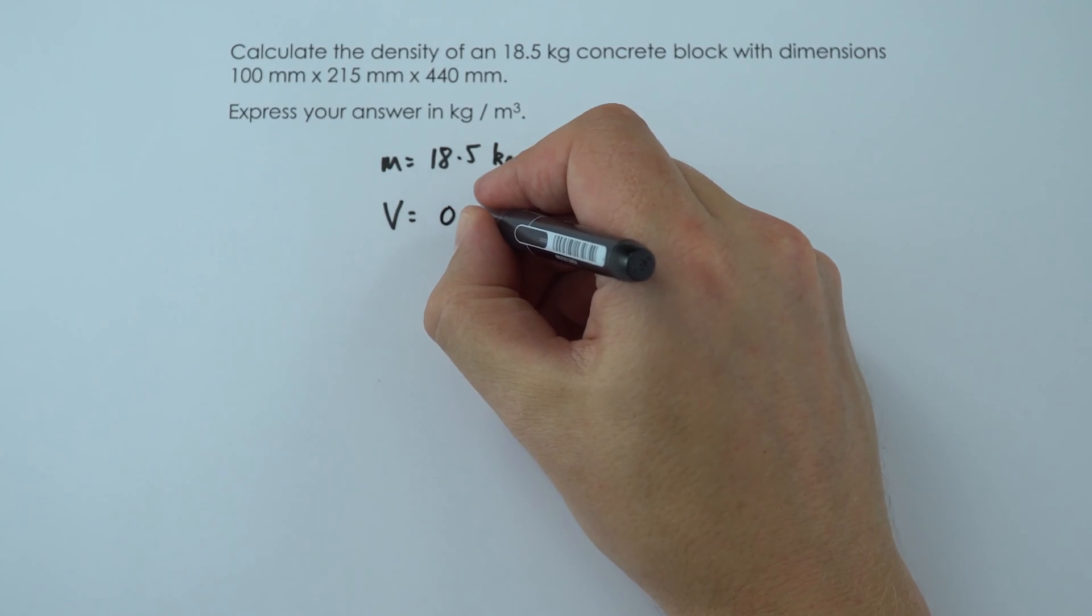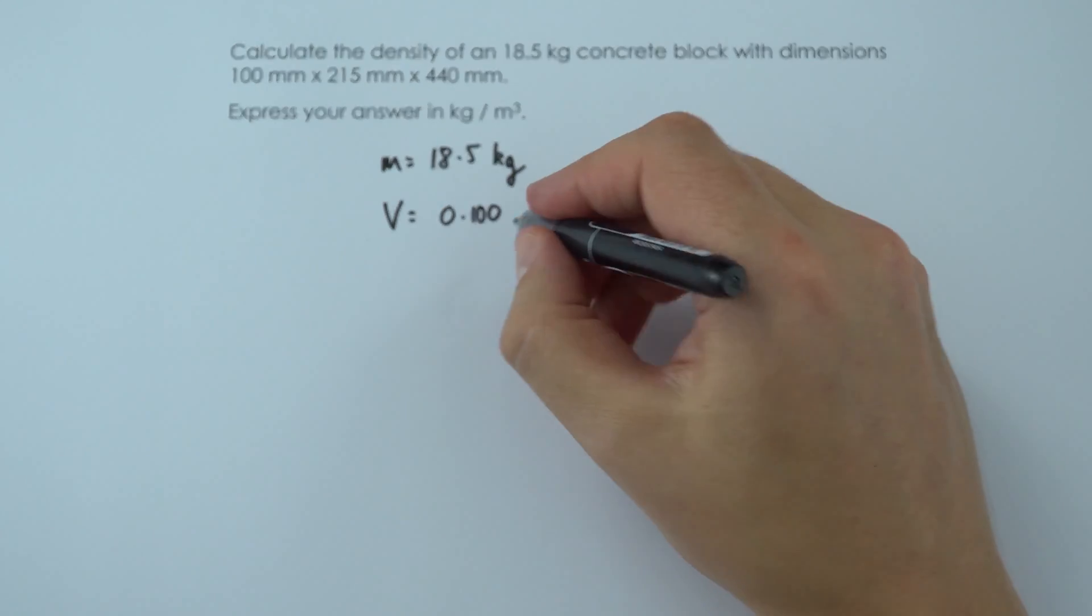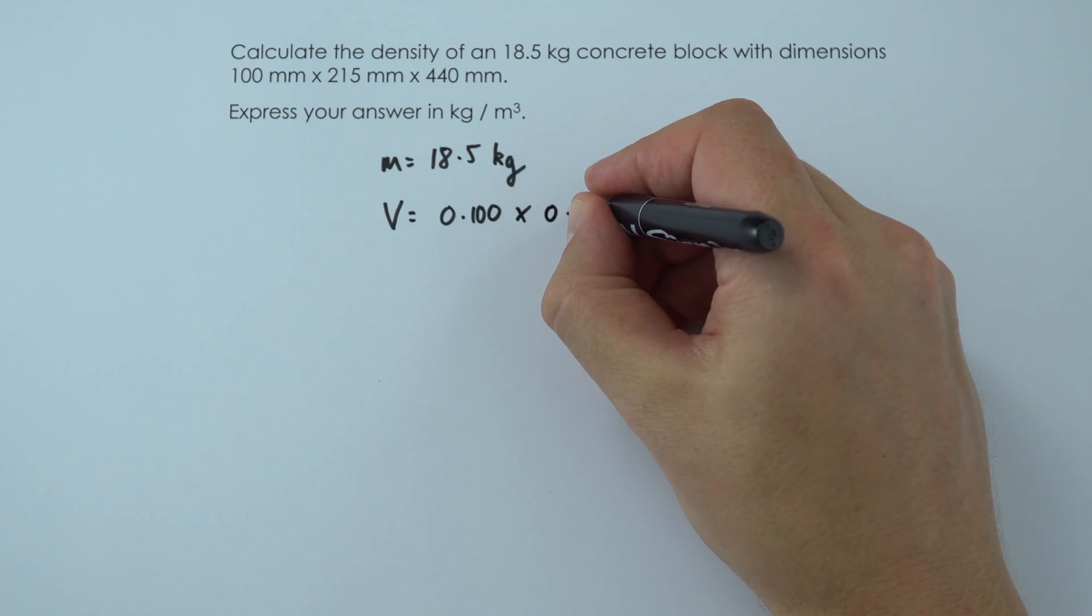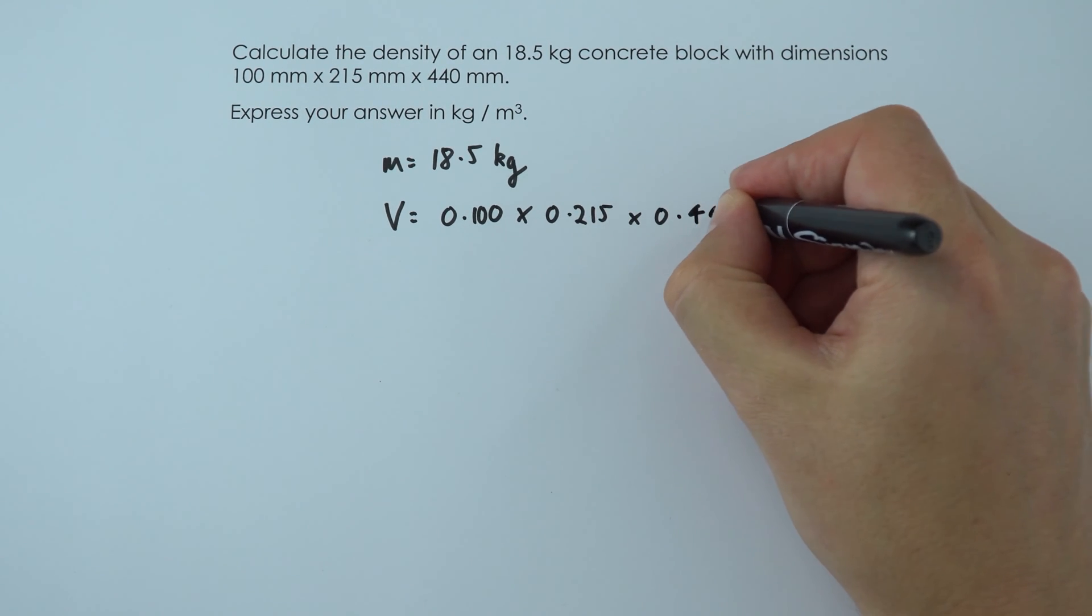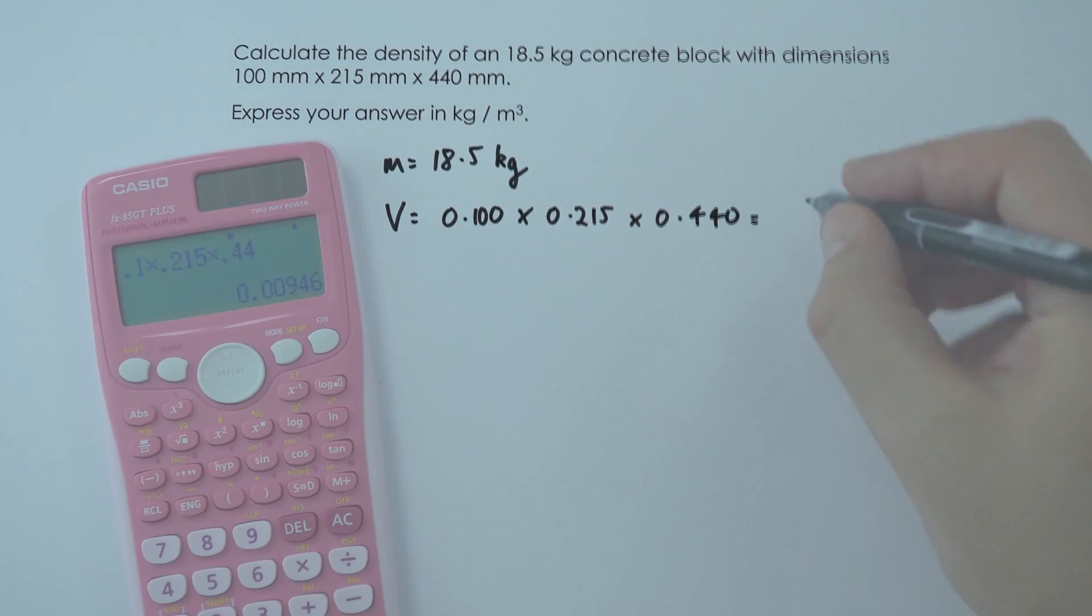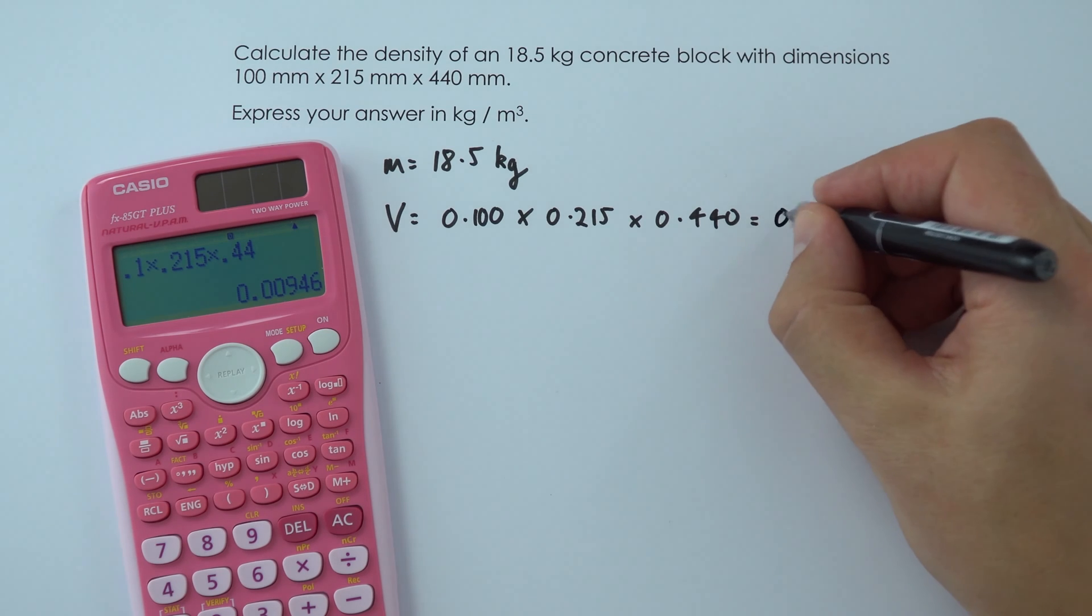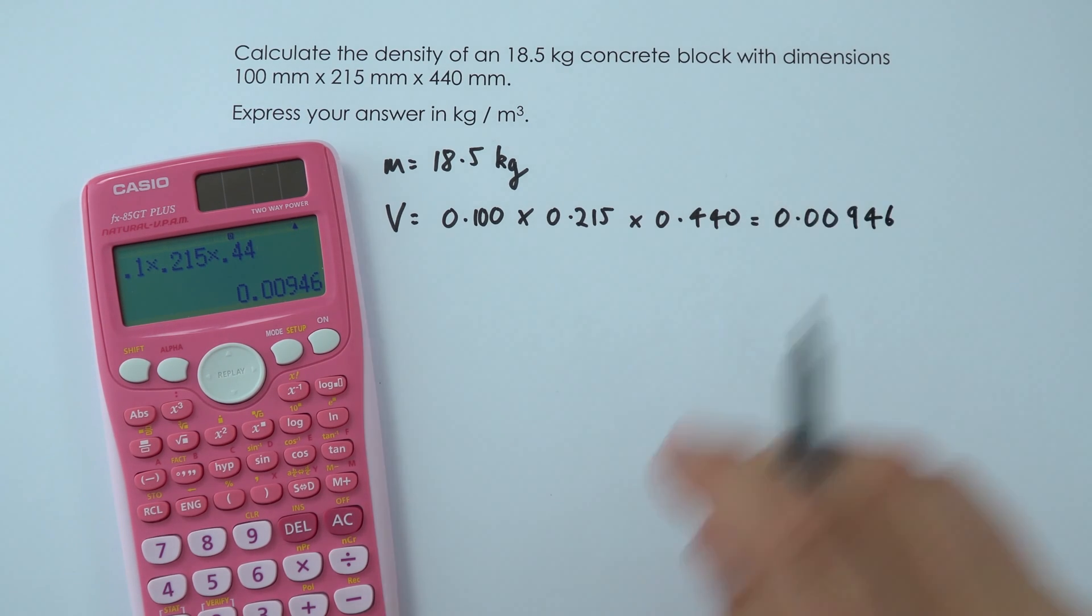So that's equal to 0.100, so all I'm doing is just dividing that number by a thousand. We multiply that by 0.215, multiply it by 0.440, and then that means that the volume of this concrete block is equal to 0.00946 cubic meters.